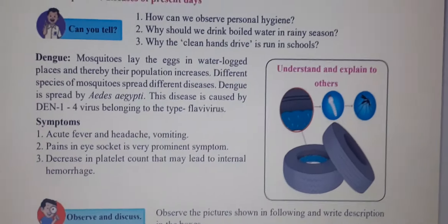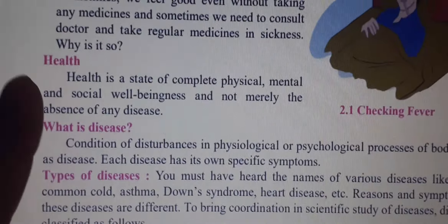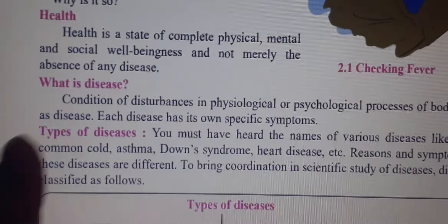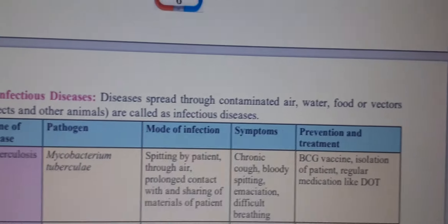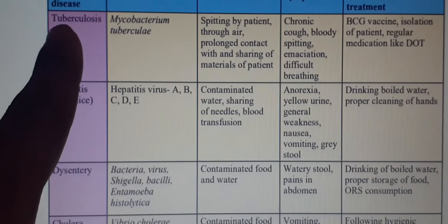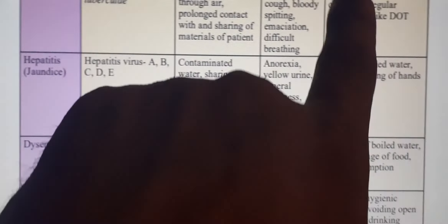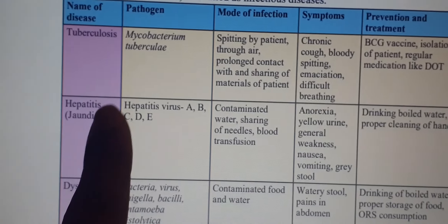For today's homework there are questions to answer. First question: what is health? Second question: what is disease and types of disease? Write the full meaning and draw a map for types of disease. Next question: what is infectious disease? Then look at the table for any two diseases — write their name, symptoms, and treatment.